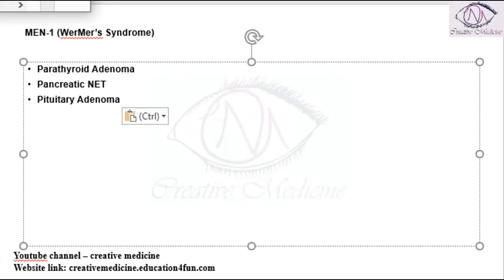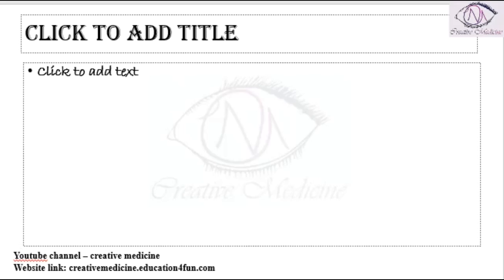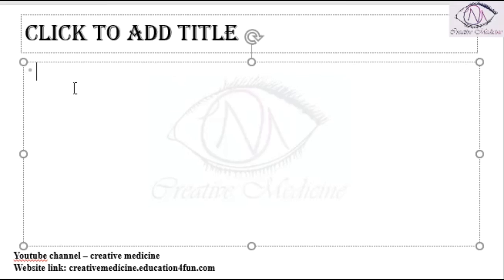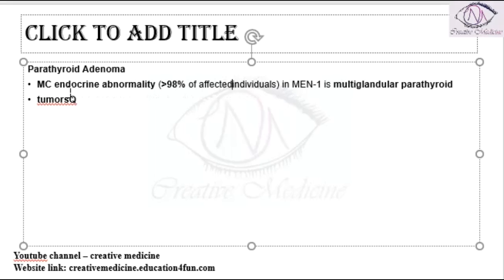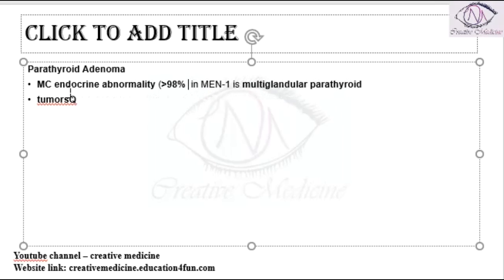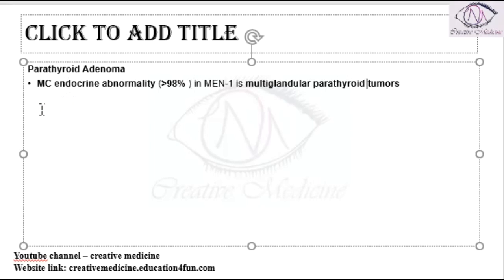In MEN 1 syndrome, the first component is parathyroid adenoma. Parathyroid adenoma is the most common endocrine abnormality in MEN 1 syndrome, and specifically, multi-glandular parathyroid tumors are seen. Multi-glandular parathyroid tumors are the most common endocrine abnormality in MEN 1 syndrome.